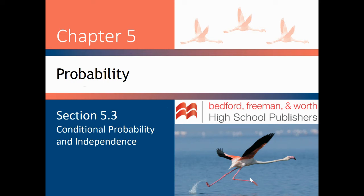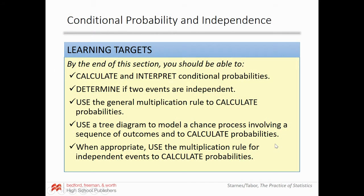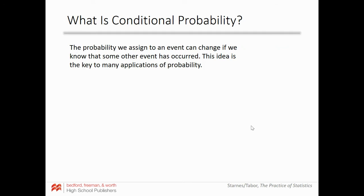Hello everyone, this is Chapter 5.3: Conditional Probability and Independence. Our learning targets for this video are to calculate and interpret conditional probabilities, determine if two events are independent, use the general multiplication rule to calculate probabilities, use a tree diagram to model a chance process involving a sequence of outcomes, and when appropriate use the multiplication rule for independent events to calculate probabilities.